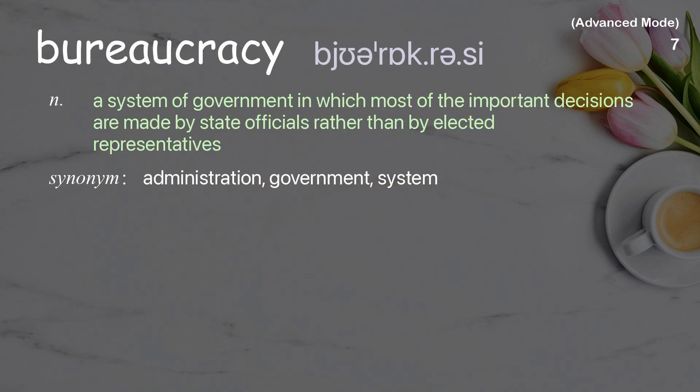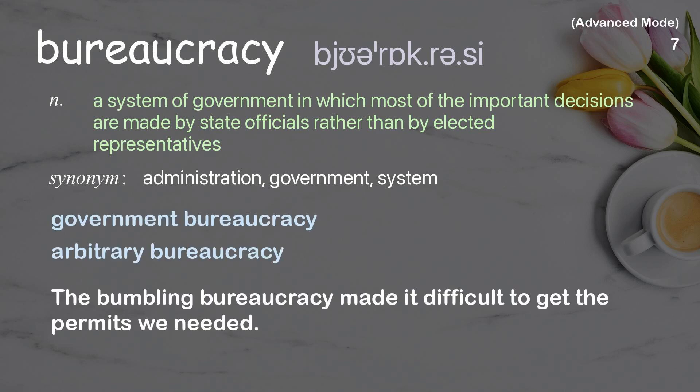Bureaucracy: a system of government in which most of the important decisions are made by state officials rather than by elected representatives. Examples: government bureaucracy, arbitrary bureaucracy. The bumbling bureaucracy made it difficult to get the permits we needed.